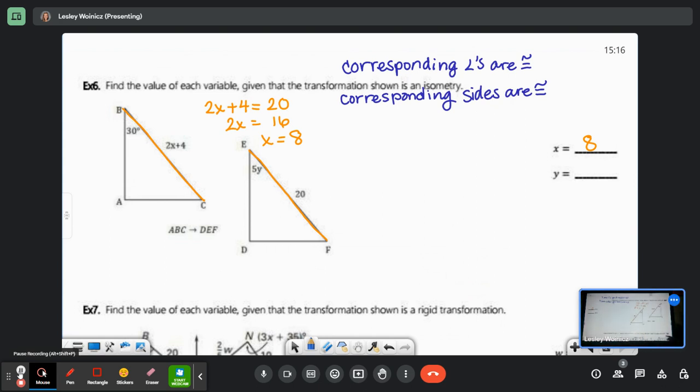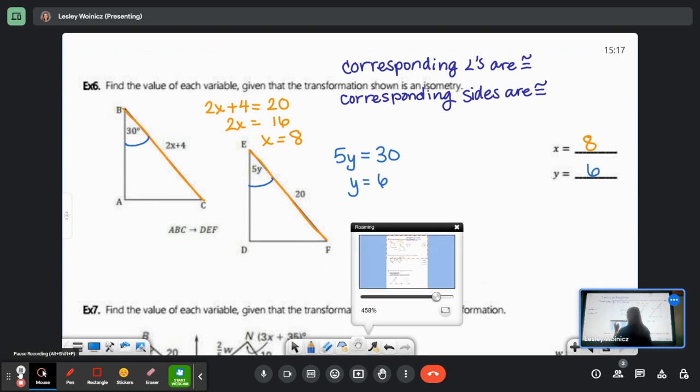Now, which angle corresponds to angle B? Angle E. So I know that 5Y has to equal 30. So what's Y? Divide both sides by 5. Y equals 6.